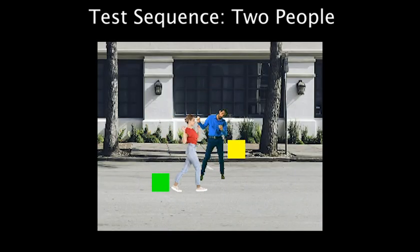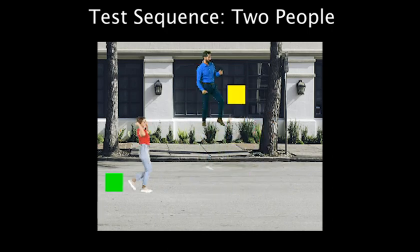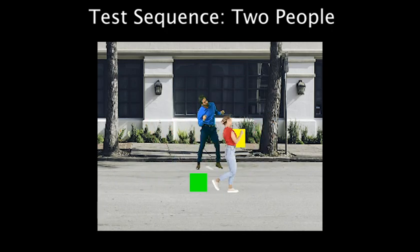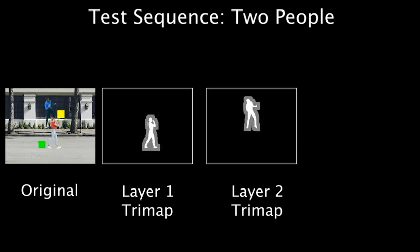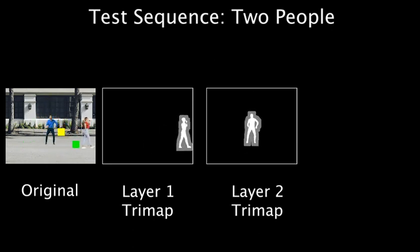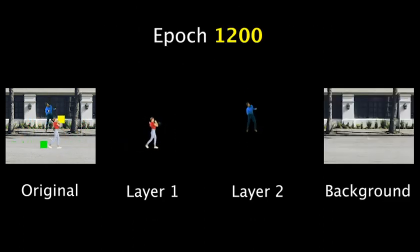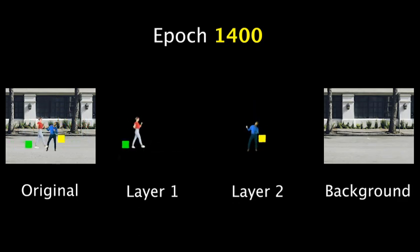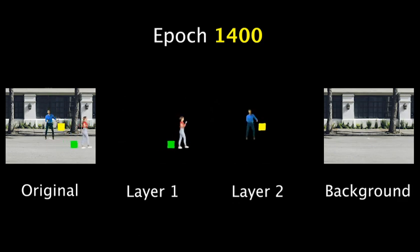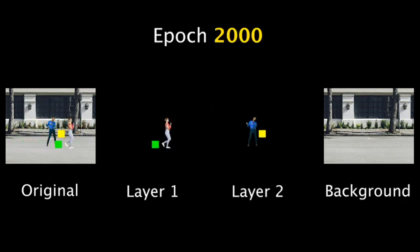When multiple people are present, effects are learned first in the layer most correlated with them. In this example, one person moves left to right, while the other moves up and down. Each person is assigned a layer, initialized with a trimap. After epoch 1200, the network learns the people. After epoch 1400, it learns the green square in layer 1 and the yellow square in layer 2, even reconstructing them when they are occluded in the input. A regularization loss ensures that once learned by one layer, the squares are not further learned by the other layer, as shown by the result at epoch 2000.